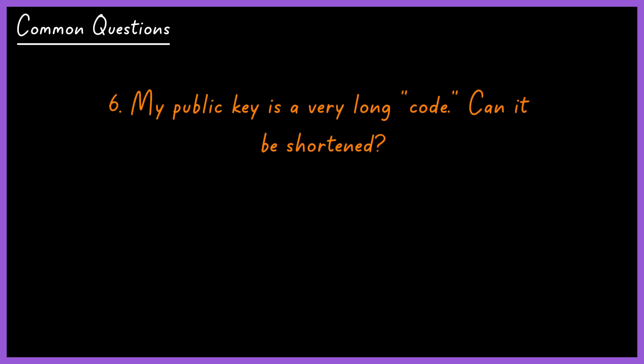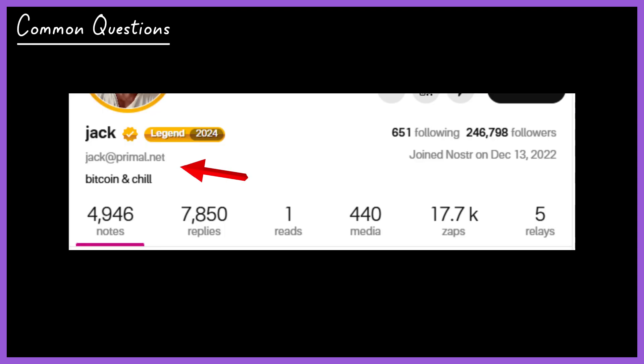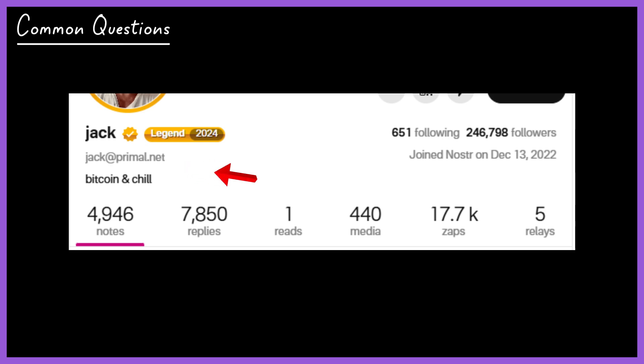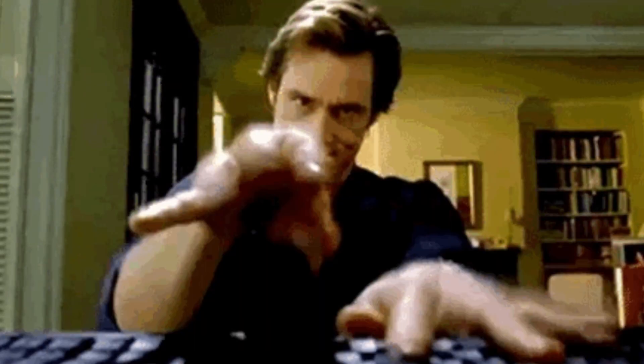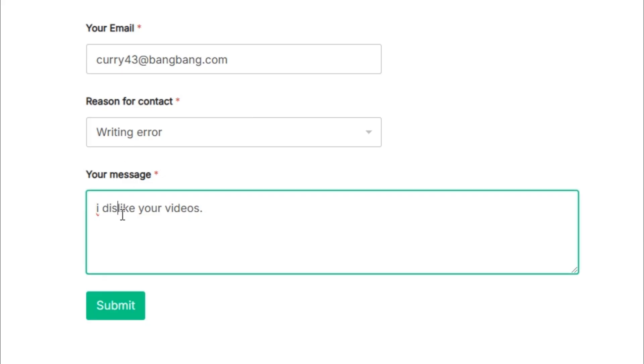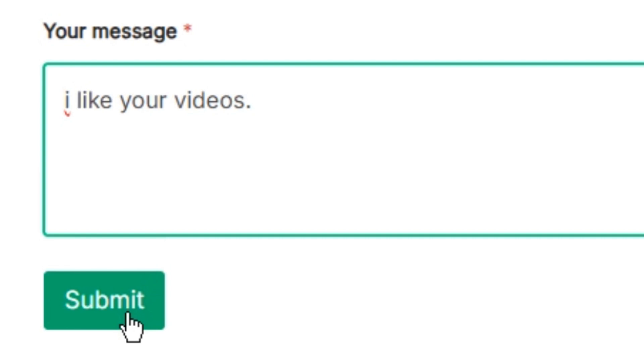My public key is a very long code — can it be shortened? Yes, NIP-05 allows you to associate a user-friendly username with your public key. For example, you can set up something like yourname@yourserver.com, which is much easier to remember and share than a long string of characters. If you have any doubts, leave them in the comments or feel free to visit our website where you'll find a contact section.